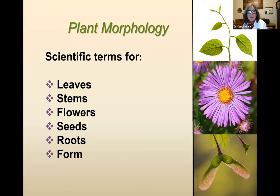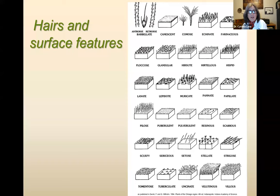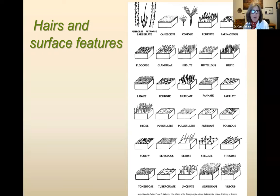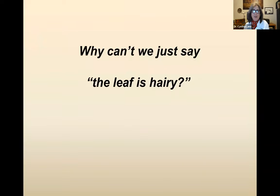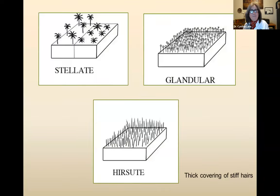When I say scientific terms, these are all the Latin, Greek, and other words that you hear for different plant parts. Just for example, for hairs and surface features, this is just one page showing some of the different terms. Just about everybody at some point when learning plant terms hits a wall and wonders why we can't just say 'the leaf is hairy.' The answer is yes, we do need all these terms, because there are a lot of different kinds of hairs, and those characters help us identify which species of plant it is.